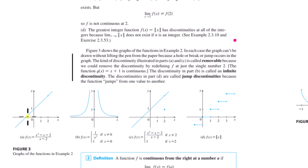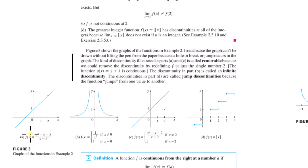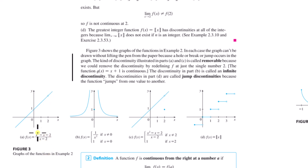You'll see this kind of limit problem where you have a rational function. If you factor the numerator, you get (x − 2)(x + 1), the (x − 2) cancels with the denominator, and you're left with x + 1. So the function simplifies to the line x + 1, but you have to put a hole at x = 2 because the original function isn't defined there.